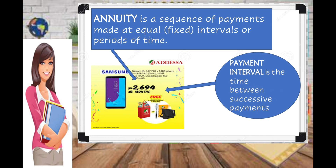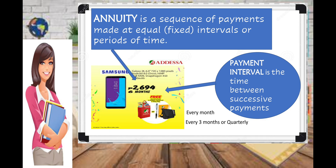The payment interval is the time between successive payments. For example, the offering of ADESA is 2,694 per month. Payment intervals may be every month, every three months (quarterly), or every six months (semi-annually).